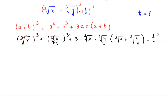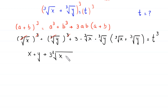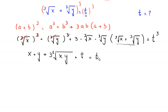The cube cancels with the cube root, and we are left with x plus y plus 3 times cube root of (x times y) times (cube root of x plus cube root of y) equals t cubed. Since cube root of x plus cube root of y equals t, this becomes: x plus y plus 3 times cube root of xy times t equals t cubed. Now we find x plus y and x times y.